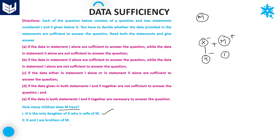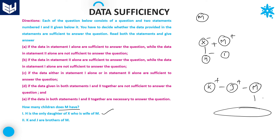Now take only statement 2: K and J are brothers of M. All three are siblings. But the question is how many children does M have — there is no information regarding M's children here. You will not get the answer by using statement 2 alone. Therefore, the required answer is option A: data in statement 1 alone is sufficient to get the answer.